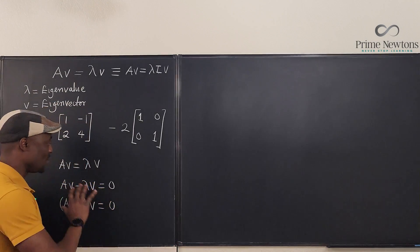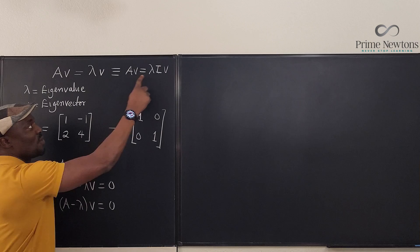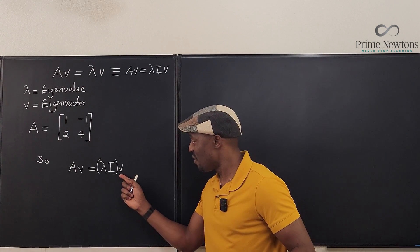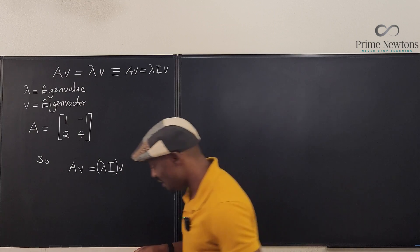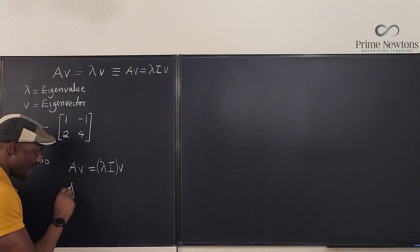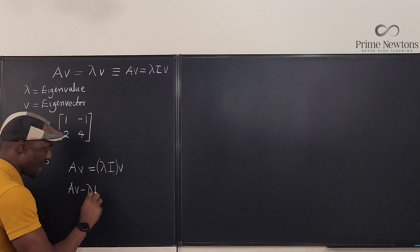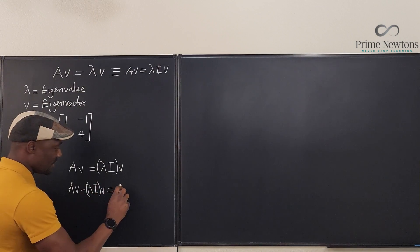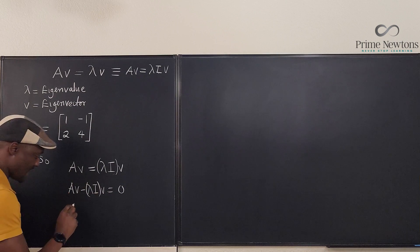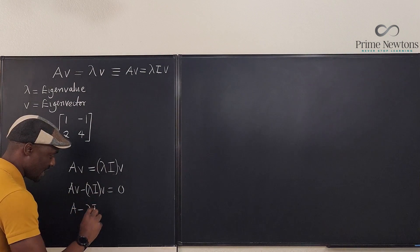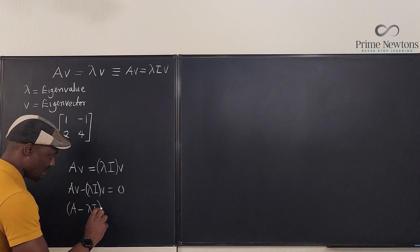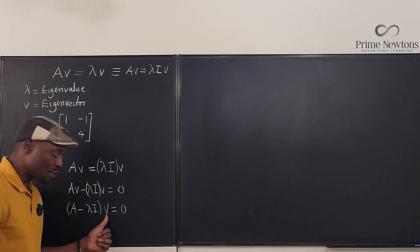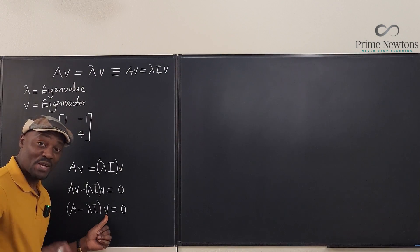Now we can do the subtraction properly. We have Av = λIv, so Av - λIv = 0. Factoring out v gives us (A - λI)v = 0. This is the key equation we'll work with.